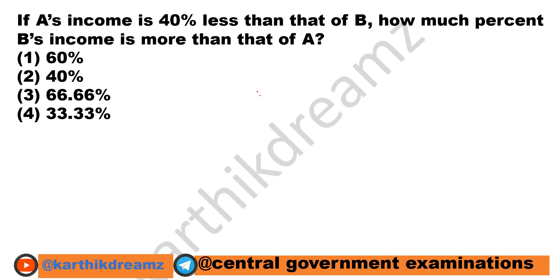If A's income is 40% less than that of B, how much percentage is B's income more than that of A? Let us assume that B's income is Rs.100. If A's income is 40% less than that of B, therefore A's income is Rs.60.